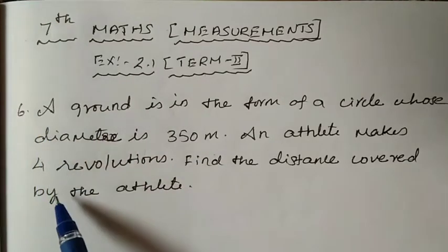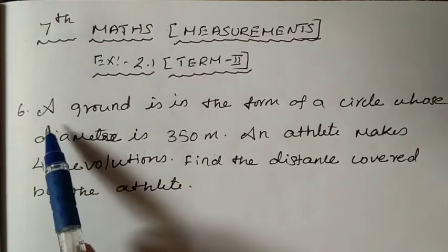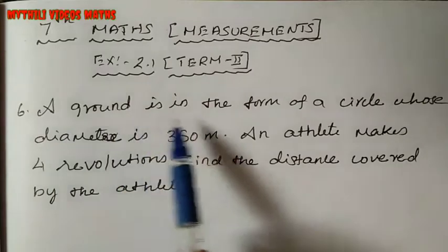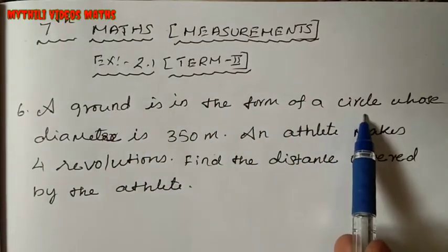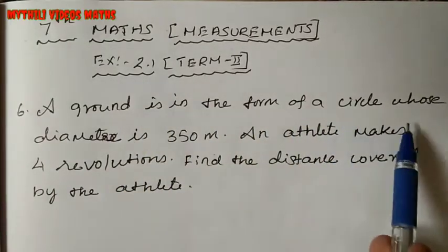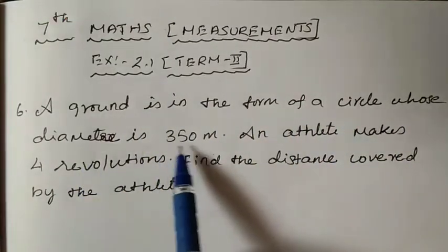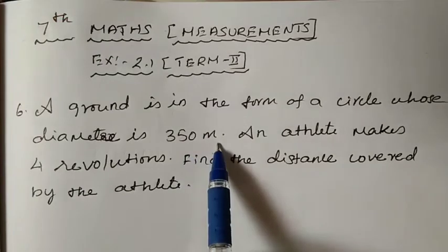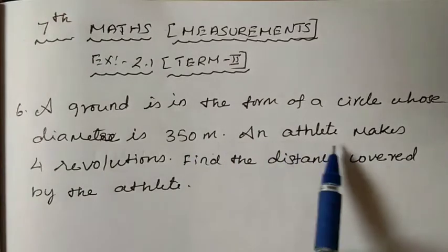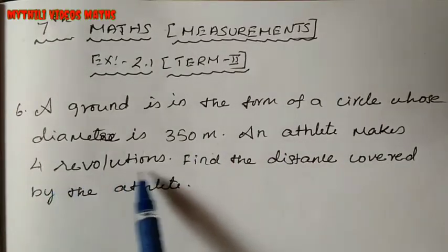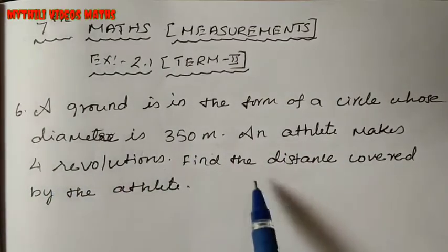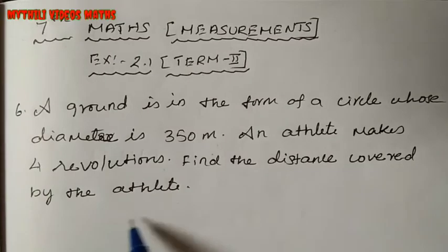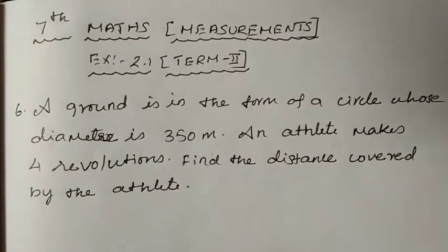Now we will see the 6th sum. Look at the 6th sum carefully. A ground is in the form of a circle whose diameter is 350 metres. An athlete makes 4 revolutions. Find the distance covered by the athlete.